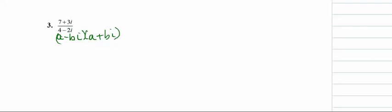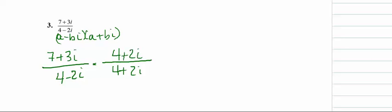So let's rewrite this: 7 plus 3i over 4 minus 2i times the conjugate, 4 plus 2i over 4 plus 2i.